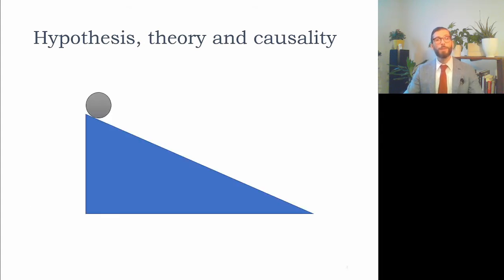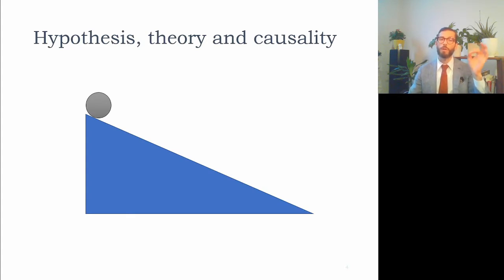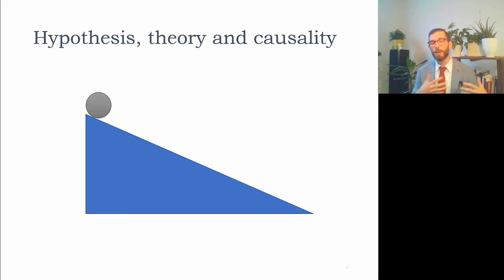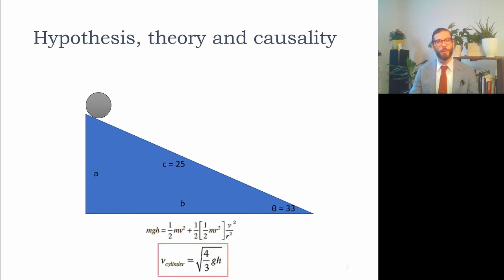In some physical sciences we can have very clearly defined theories. For example, we can have a theory about the maximum speed a cylindrical shaped object will reach as it rolls down a wedge, and we can hypothesize that forces like gravity, friction, and acceleration will all weigh into the equation.